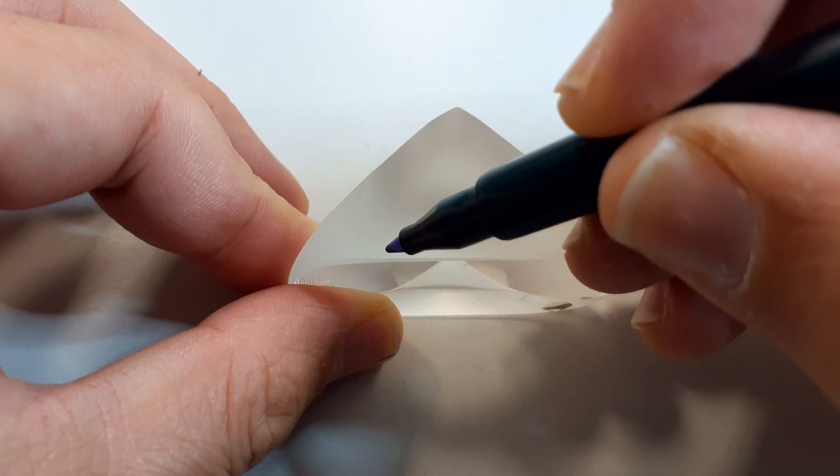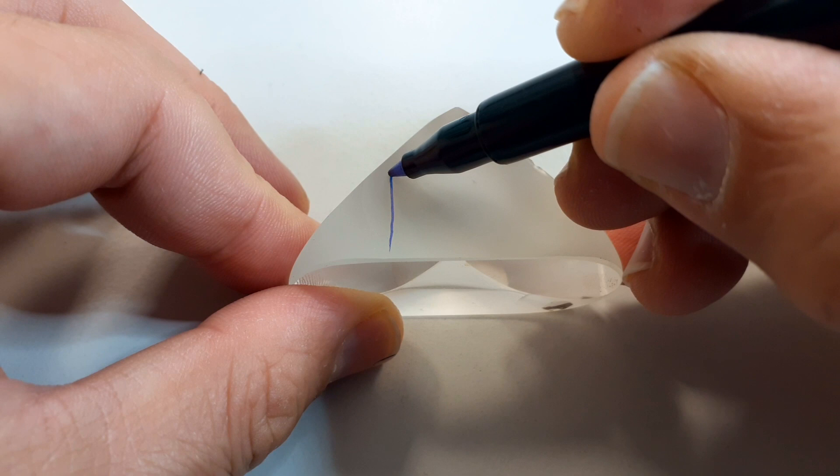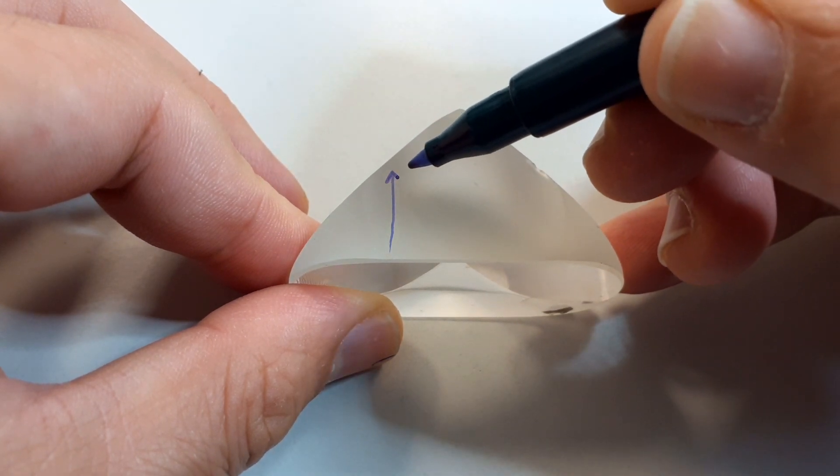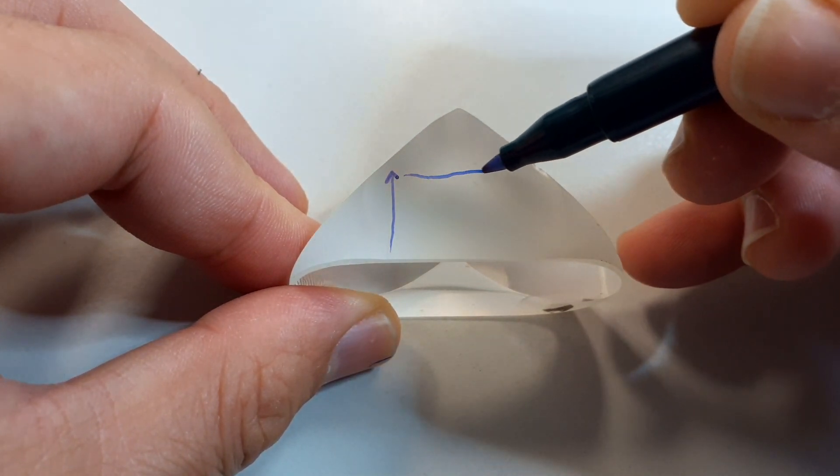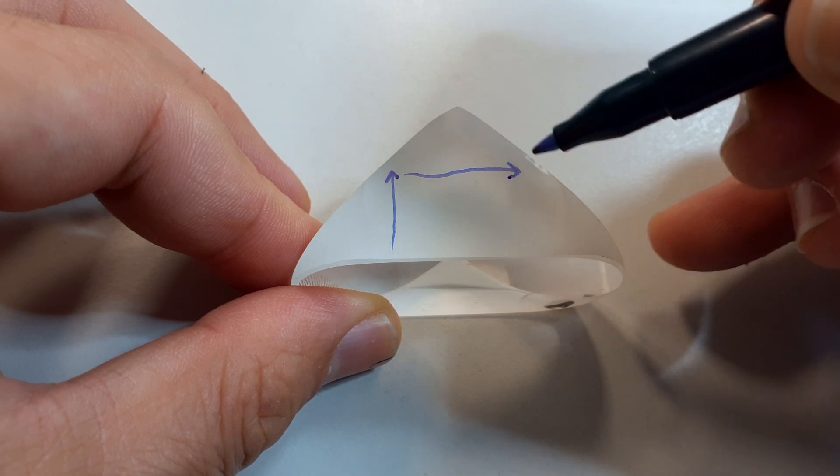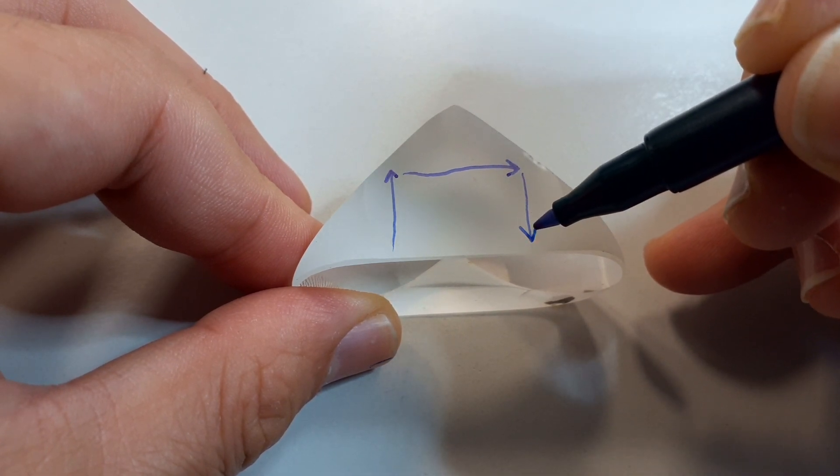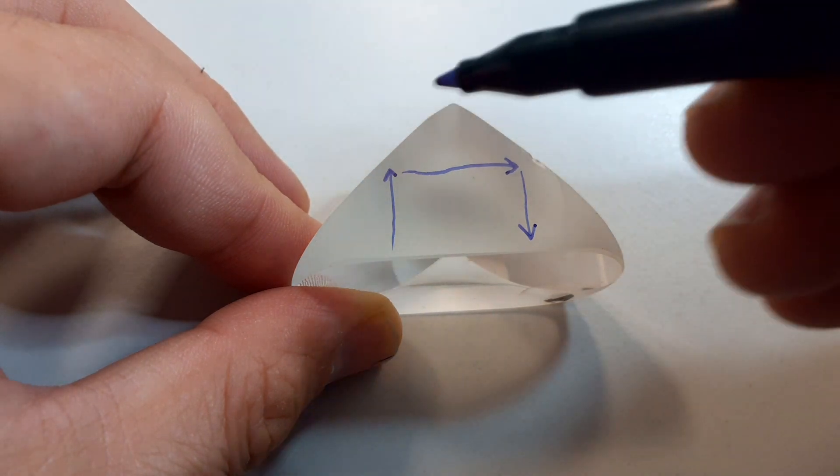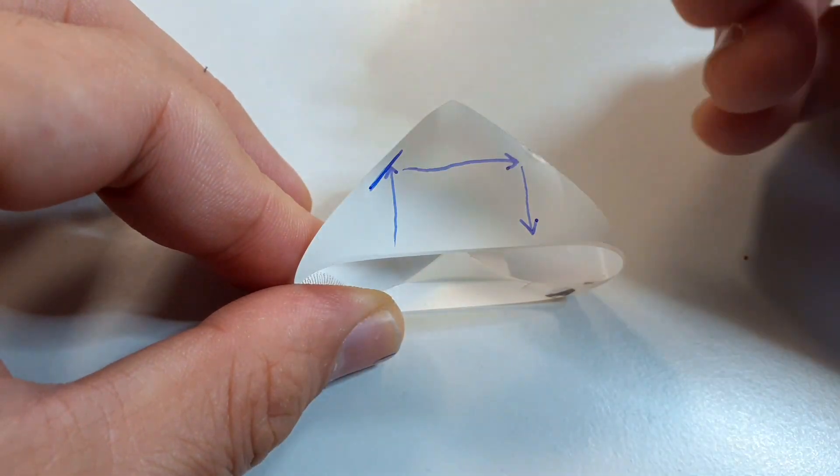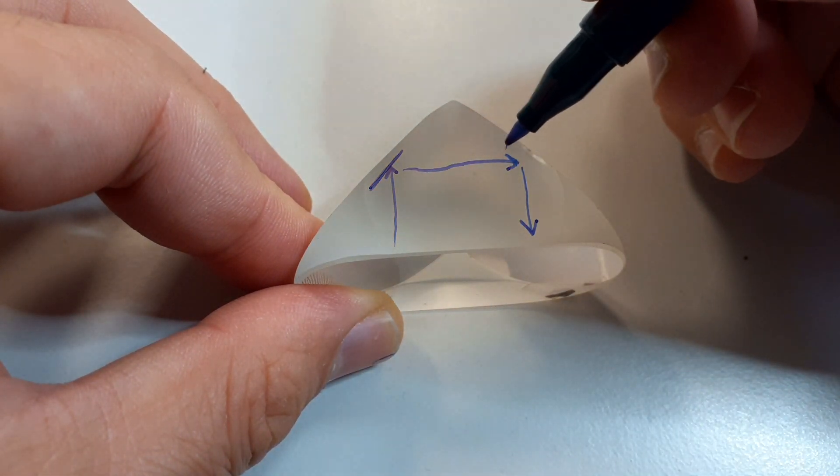I'm now using a felt tip marker to trace out the light path. So the light enters on one side is then reflected at a 45 degree angle of the prism, reflects at 90 degrees and then back out again. And this flips the image from the left to the right. And this is what we call a total internal reflection on two sides of the prism.